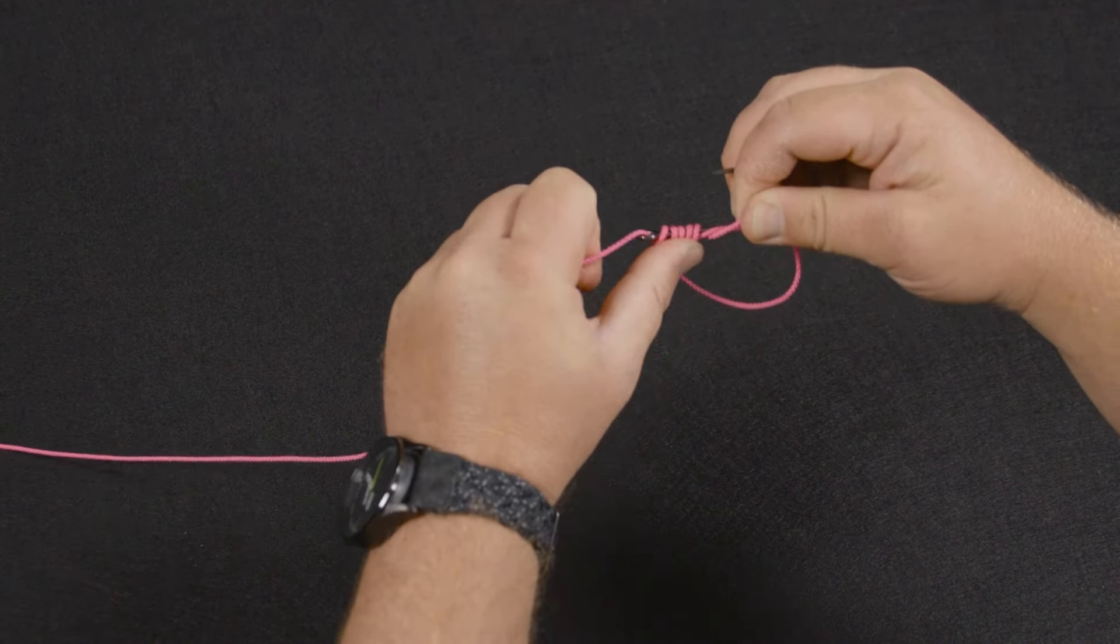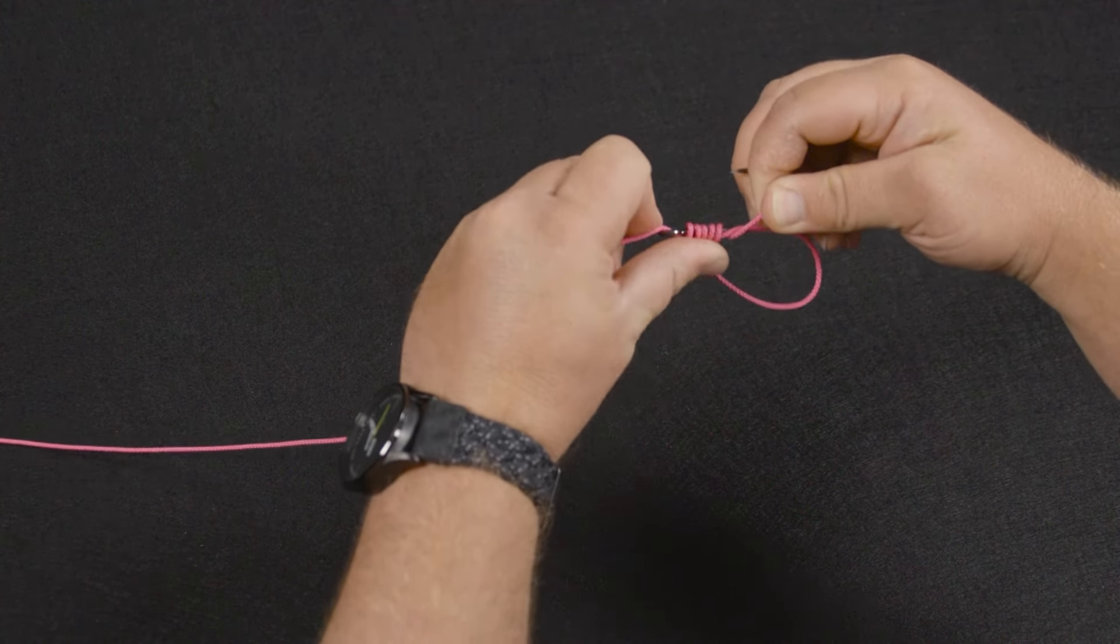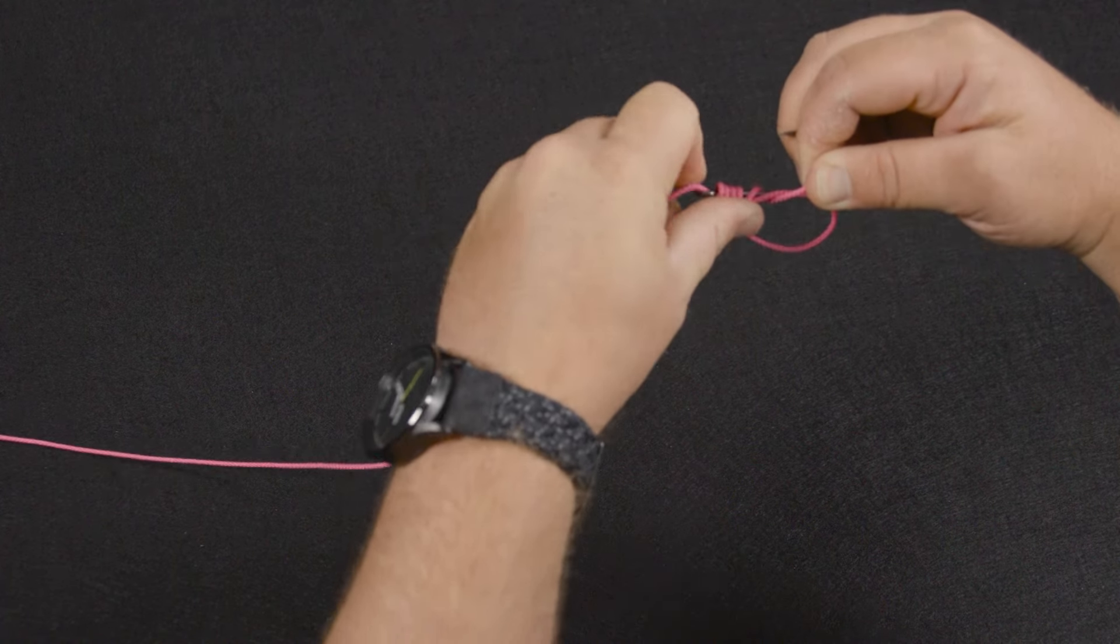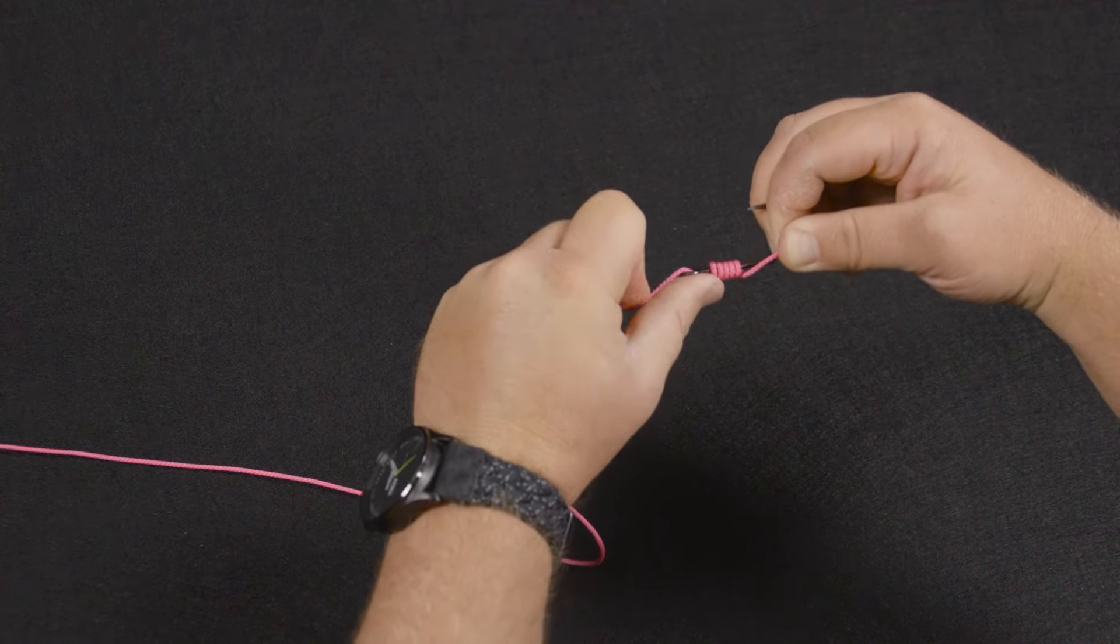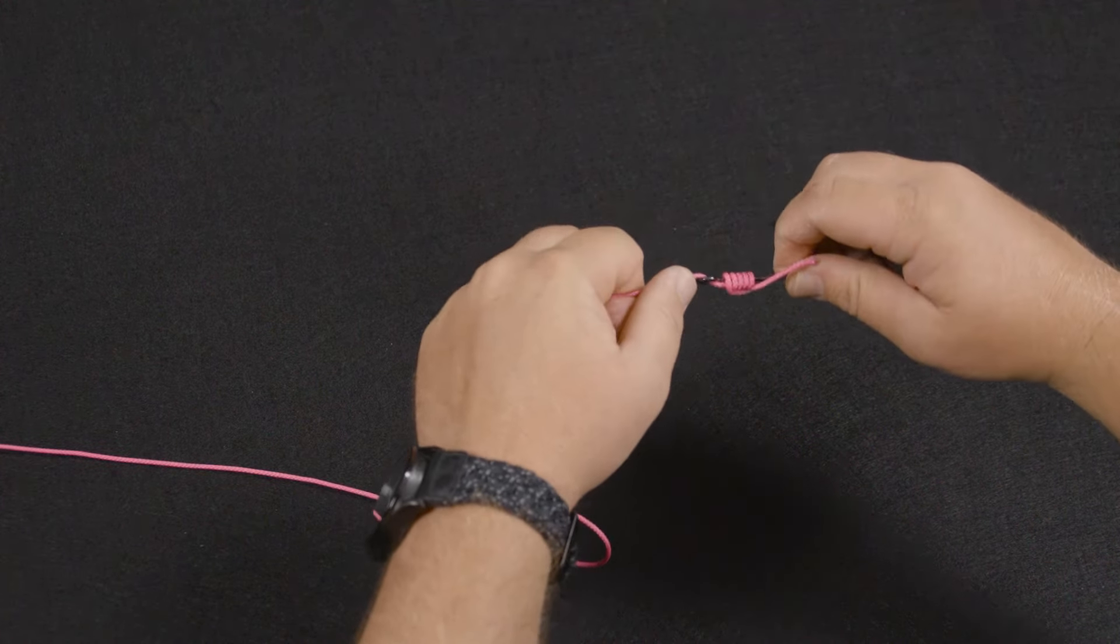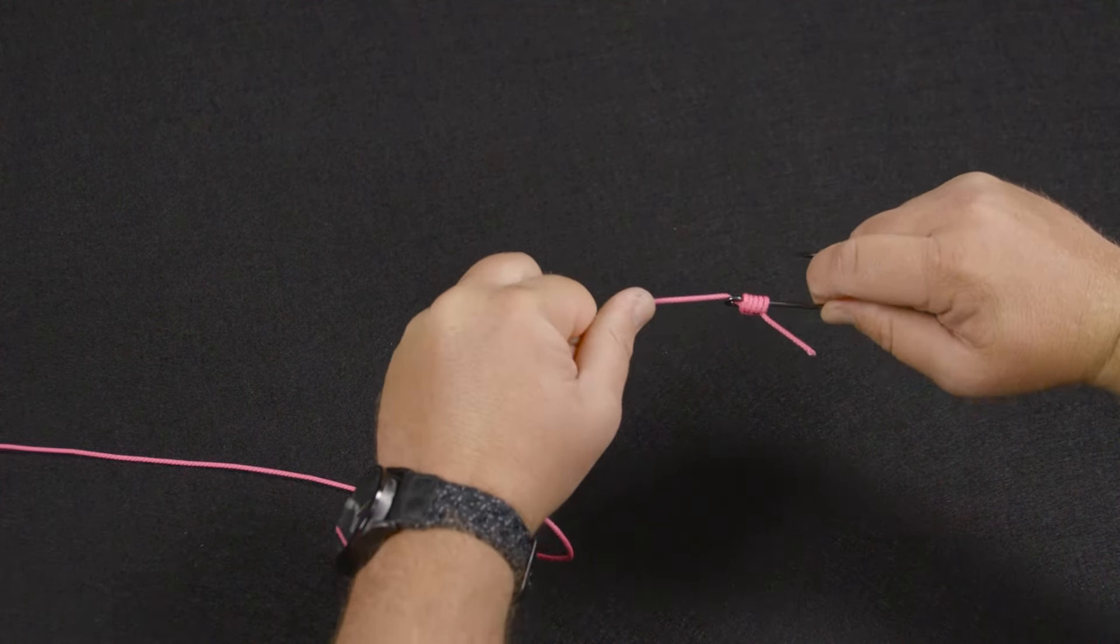And then you go ahead and hold that. I like to keep my thumb on the knot. That way it folds up nicely. And then I pull that back, pull it tight.